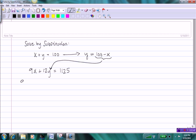So here's what it looks like. 9X plus 12, and then instead of writing Y, I'm going to write 100 minus X.